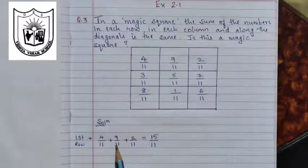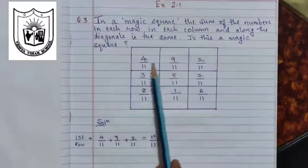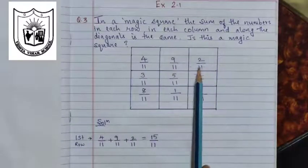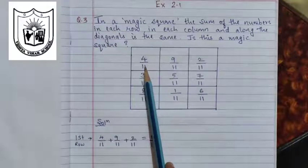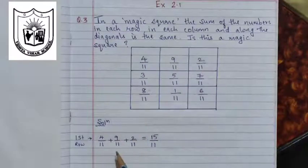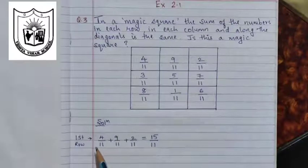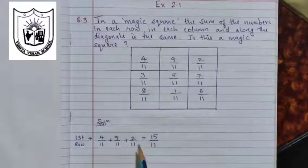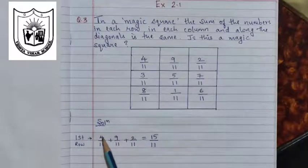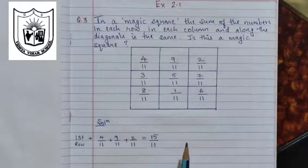The first example is solved and given there. So the first row — the three fractions along the row, we have 4 upon 11, 9 upon 11 and 2 upon 11. When we add all these three fractions, the denominator is the same, so it can be written once. Add the numerators: 4 plus 9 plus 2, we have the answer as 15 upon 11.